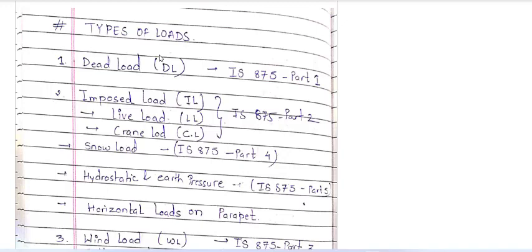This was the loading that we had in the beam, which we had in the columns, which we discussed. But basically, when we have original structures and constructs, how do we define the load? First of all, we have a term called dead load. So, what is dead load?